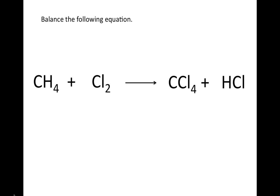Let's take a look at an example and try balancing this equation. Before we start, we're going to want to take an inventory of how many of each type of atom are on each side of our reaction arrow. On the reactant side, we have one carbon atom, four hydrogen atoms, and two chlorine atoms.